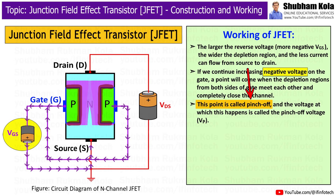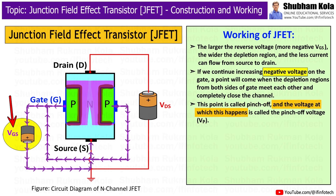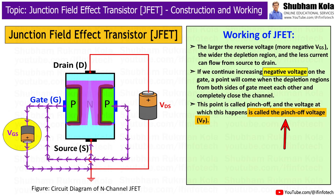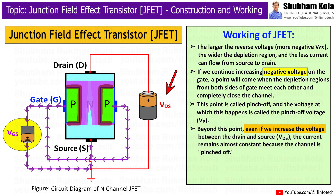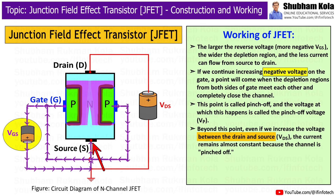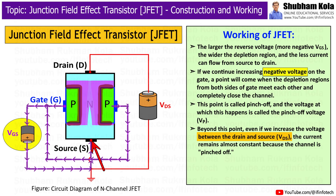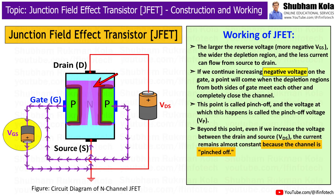This point is called the pinch-off point, and the voltage at which this happens is called the pinch-off voltage, i.e. Vp. Beyond this point, even if we increase the voltage between the drain and the source Vds, the current remains almost constant because the channel is pinched off.